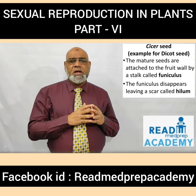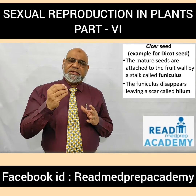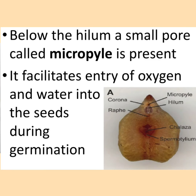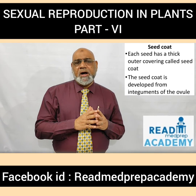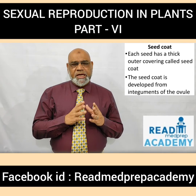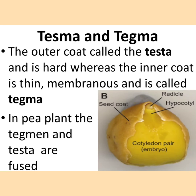The dicot seed example is Sesbania. Mature seeds are attached to the fruit wall by a stalk called the funiculus; the funiculus disappears leaving a scar called the hilum. Below the hilum is a small pore called the micropyle, which facilitates entry of oxygen and water during germination. Each seed has a thick outer covering called the seed coat, developed from the integuments of the ovule. The outer coat is called the testa (hard) and the inner coat is the tegmen (thin and membranous). In the pea plant, the tegmen and testa are fused together.